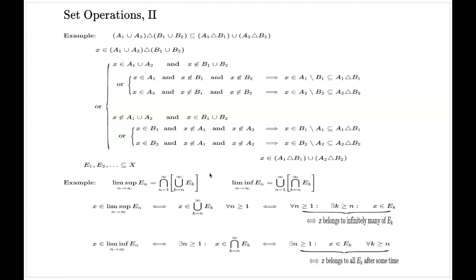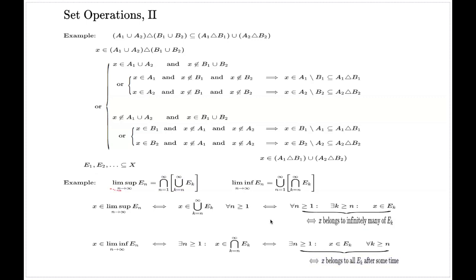So remember: lim-inf and lim-sup are two new concepts based on a sequence of sets, and they are abstract set operations. Lim-sup is the set of points which appear in infinitely many E_k's. Lim-inf is the set of points which appear in all but finitely many E_k's — that is, X belongs to all E_k's with the exception of just some finitely many initial ones.